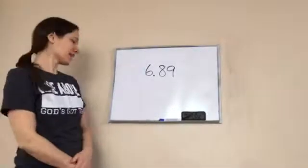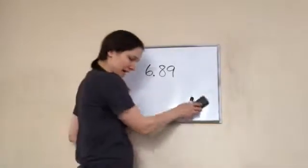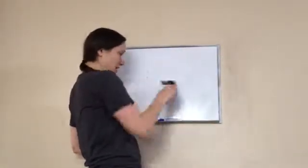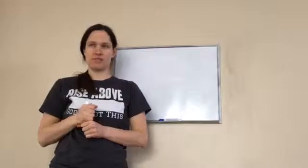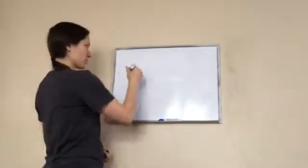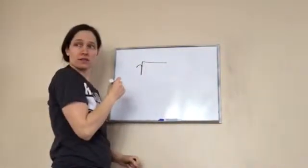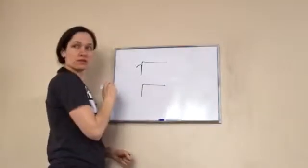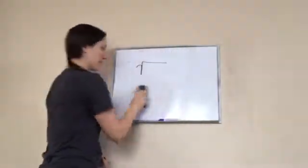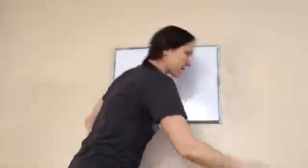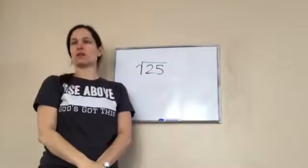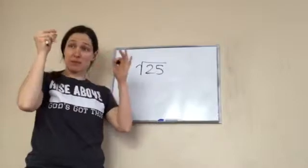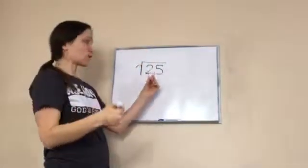Okay, sixth grade lesson 89 — this is on estimating square roots. Do you remember what square roots are? So it looks something like this. You have to have the same number twice to equal it. For example, what is the square root of 25? Five times five — you think of the same number, five and five, that equals it perfectly.